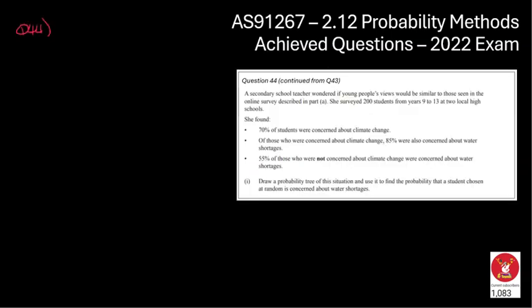We are now onto question number 44 — the final achieved question from the 2022 exam. A secondary school teacher wonders if young people's views would be similar to those in the online survey. She surveyed 200 students from two local high schools. She found that 70% of them were concerned about climate change. Of those concerned about climate change, 85% were also concerned about water shortages. And 55% of people not concerned about climate change were concerned about water shortages.